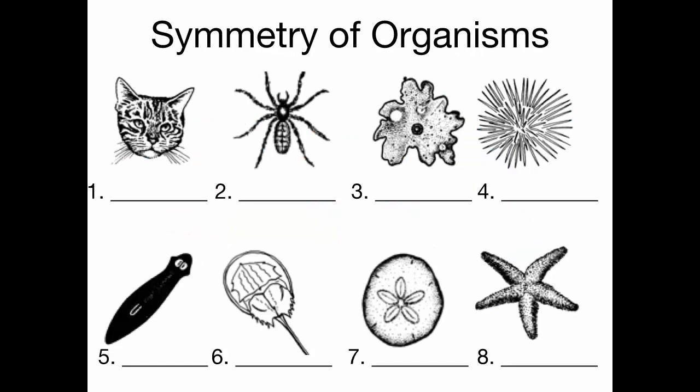Looking at more examples: a butterfly has bilateral symmetry — two equal sides. A spider trips people up — it looks radial, but it's actually bilateral. If you drew a line crosswise, you'd have the head and thorax separate from the abdomen — not quite equal parts. So the spider is bilateral symmetry.